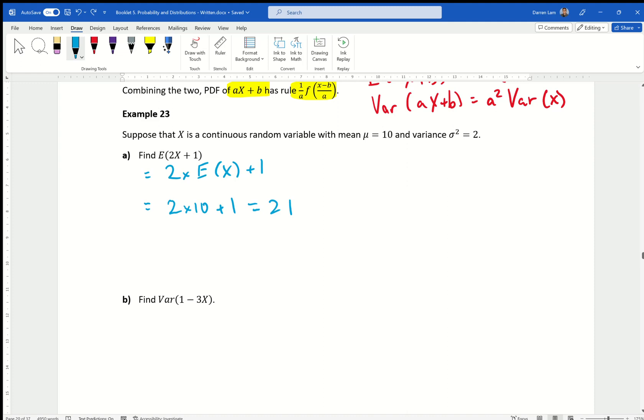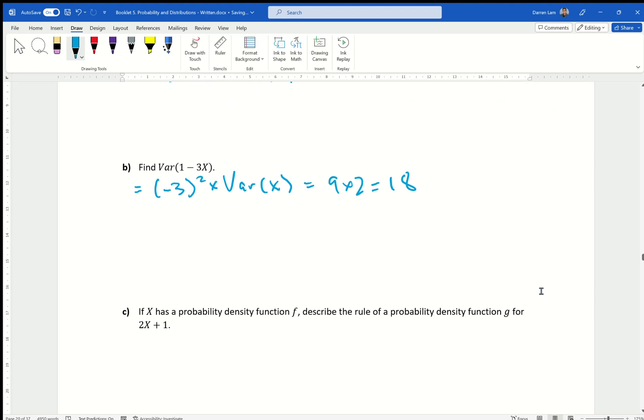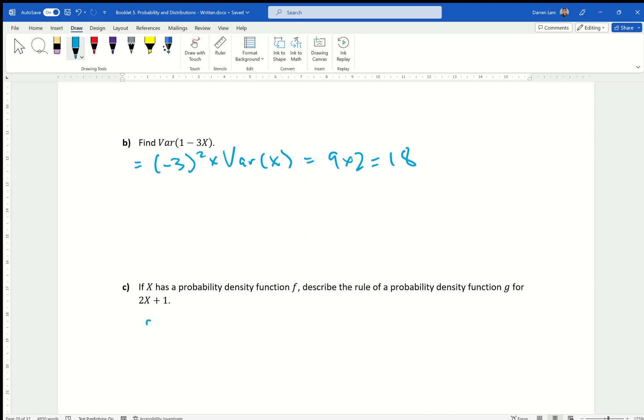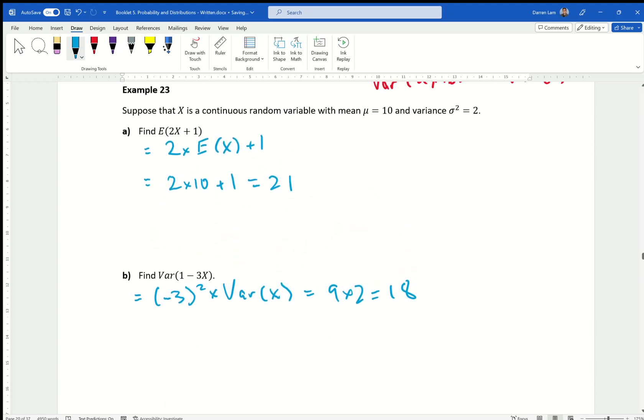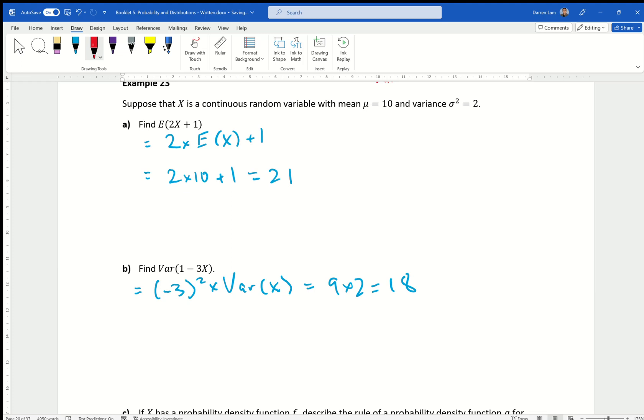Find the variance. Variance is going to use a different formula, though it's very, very similar. Noting that a is always the coefficient of x, not just the first term. So that becomes the negative 3 squared times the variance of x, which is 9 times 2 equals to 18. If x has a probability density function f, describe the rule of a pdf g for 2x plus 1. We define it. a equals to 2, b equals to 1. I know that, apologies, I forgot to mention earlier. The reason why variance x is 2 is because the variance of x equals to sigma squared. Or if you square it both sides, the square root of variance is sigma. So I've just put that number back in.